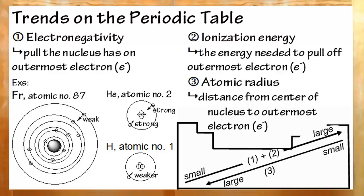To recap, the three trends you need to know are electronegativity, the pull the nucleus has on the outermost electron; ionization energy, the energy needed to pull that electron off; and atomic radius, or how big the atom is. The trends for electronegativity and ionization energy go from smallest here to largest over here. And the opposite trend is true for atomic radius. Smallest up here, largest down here.